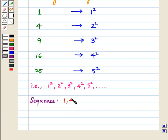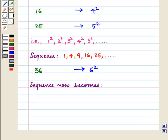1, 4, 9, 16, 25, and so on. So the next number in the sequence will be 36, which is obtained by squaring 6.